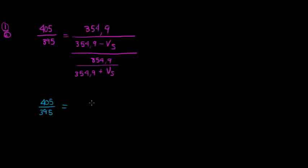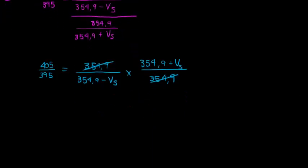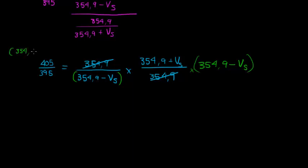405 divided by 395 is equal to, and now I can divide the coefficients, 354.9 divided by 354.9 minus Vs. This is divided by 354.9 over 354.9 plus Vs, and then this and that is divided, and that just gives me one, and that's why I did it. Because when I do that, I get rid of the Fs, that's not even asked in this question. So let's keep this as 405 over 395. On the right hand side, we have a fraction dividing a fraction, so we flip and multiply.